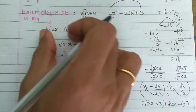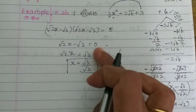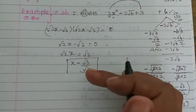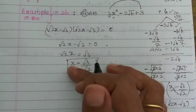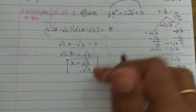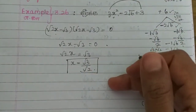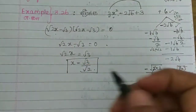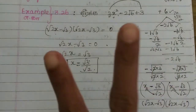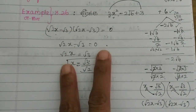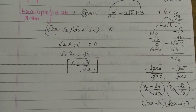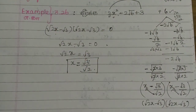If you put the factor equal to zero, then x equals root 3 and x equals root 3. So the root is root 3 by 2. There are two roots — we have root 3 by 2. That's all.